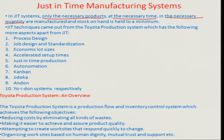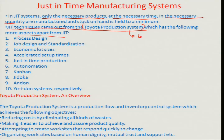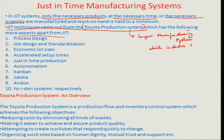Overall, the product that is made is delivered with whatever is necessary, at the right time and the right place. JIT came out of the Toyota Production System, and the TPS is a much larger manufacturing system which includes JIT as only one of its components.